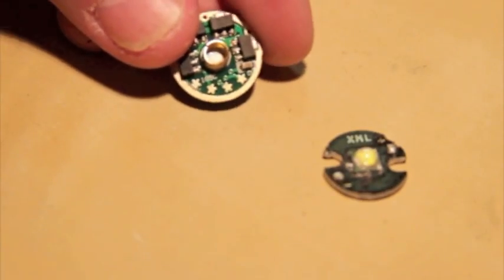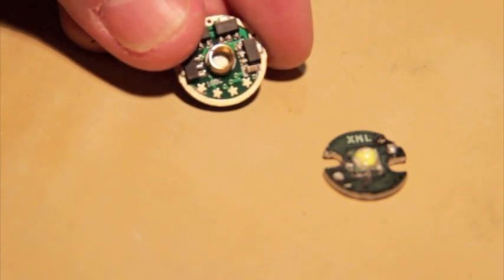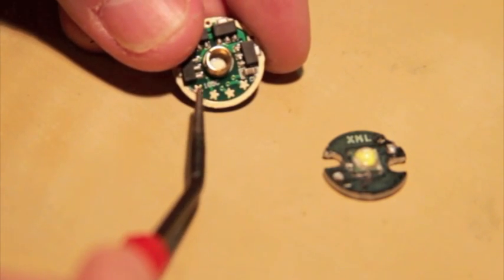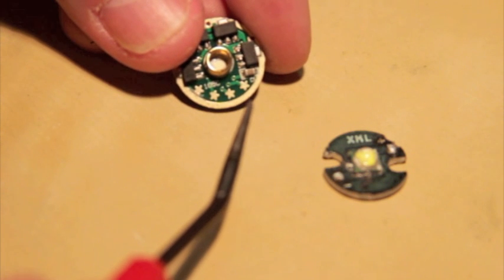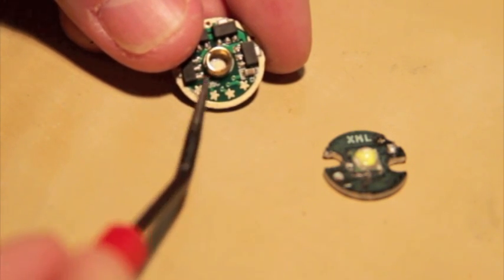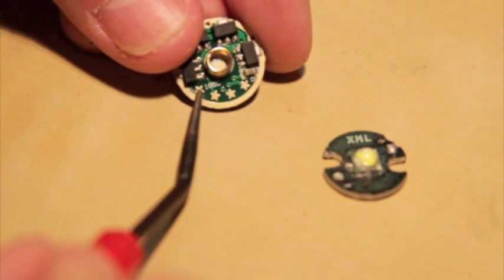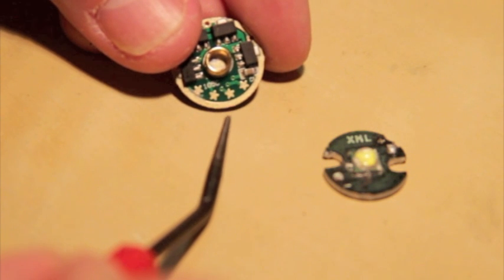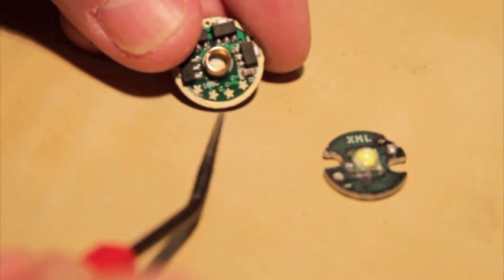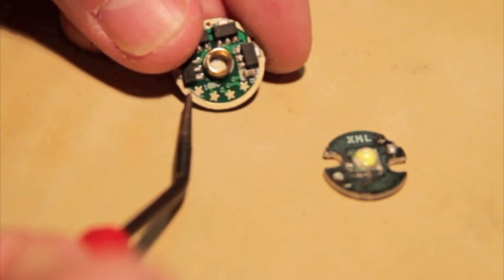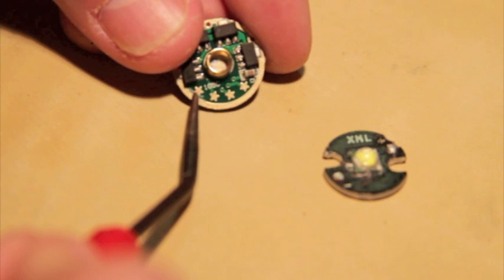Now, to my knowledge, these different stars represent different modes. So, the first one is the default star. If you just solder everything back together, it will give you the default one, which is low setting, mid, high, strobe, and SOS.